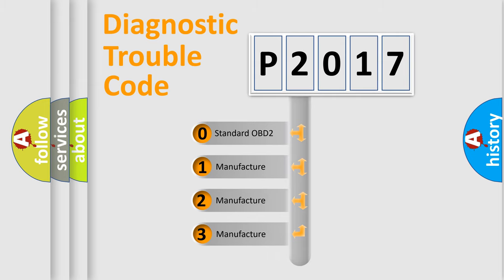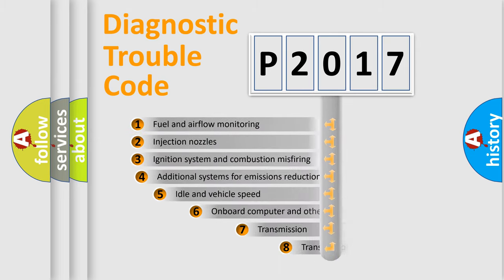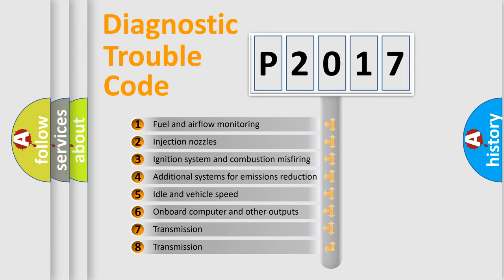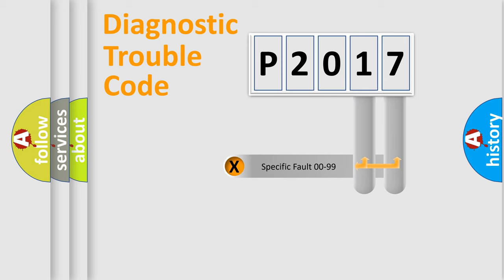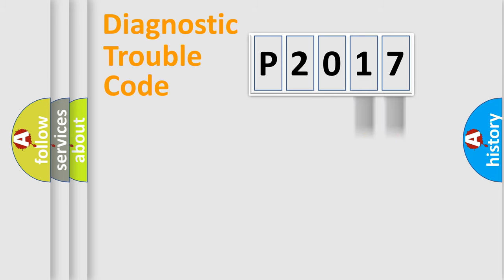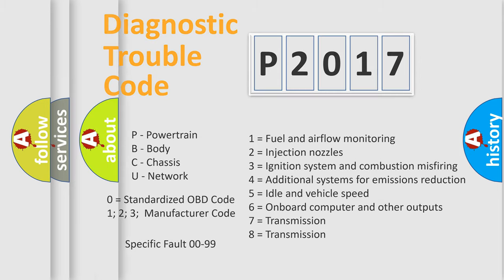If the second character is expressed as zero, it is a standardized error. In the case of numbers 1, 2, or 3, it is a more specific expression of a car-specific error. The third character specifies a subset of errors. This distribution is valid only for the standardized DTC code. Only the last two characters define the specific fault of the group, and this division is valid only when the second character is zero.